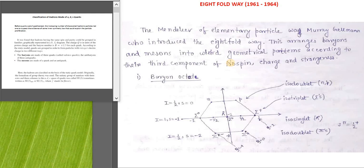Let's start with the Eightfold Way. The Mendeleev of elementary particles was Murray Gell-Mann who introduced the Eightfold Way. This was discovered in 1961 to 1964. This is a very unique way of arranging the various baryons and mesons, basically hadrons, into weird geometrical patterns according to their third component of isospin, charge, and strangeness.